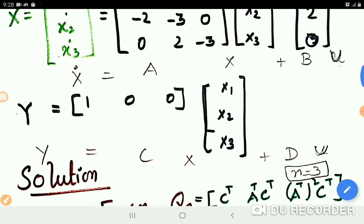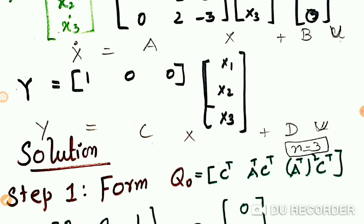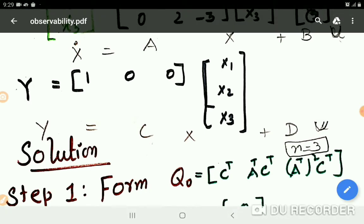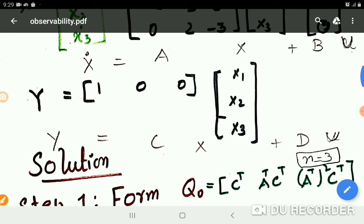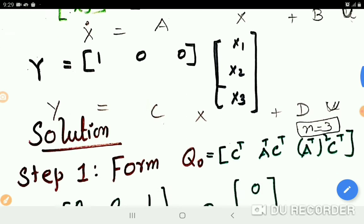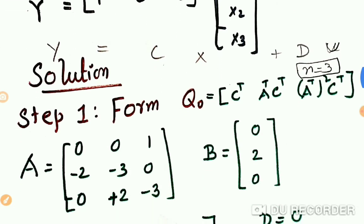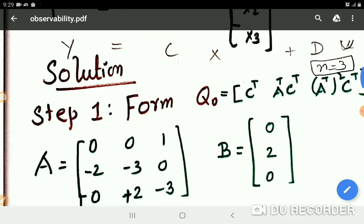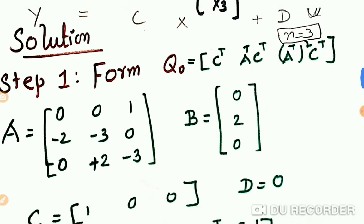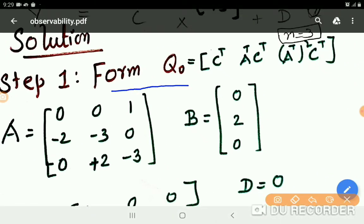So while moving to the solution part, as usual way we just compare with a standard form and list A matrix and C matrix to frame Q0. Then step one: form Q0. According to given things, it is an n by n cross n A matrix as 3 by 3, so n is equal to 3 here.